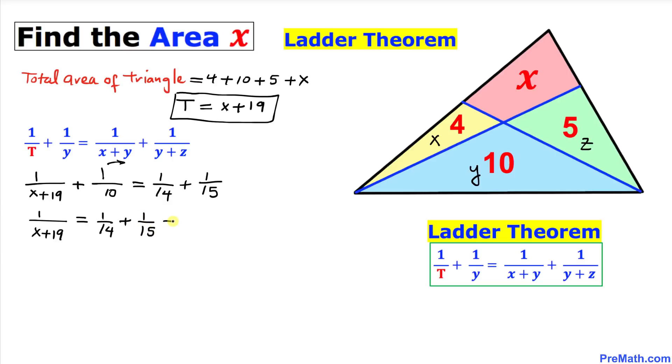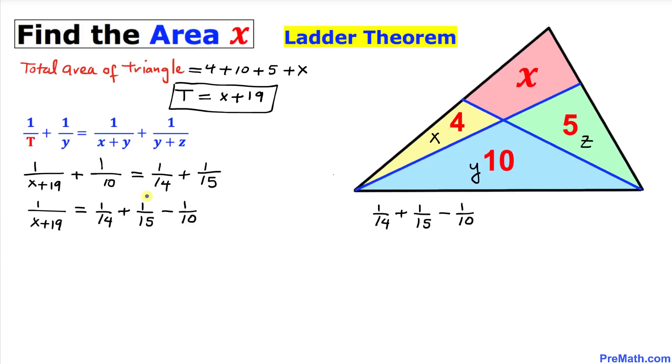Now let's focus on these fractions on the right hand side. I have just copied them down right up here and with multiple steps I have just simplified them, and our reduced simplified form turns out to be 4 over 105. So I can write this thing: one over x plus 19 equals 4 divided by 105.